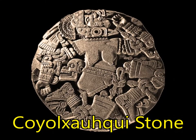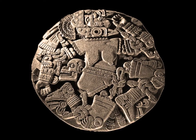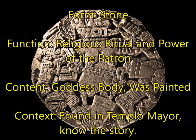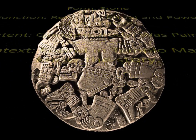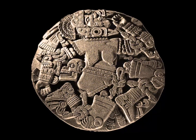Finally, you have the Coyolxauhqui Stone, which would have been painted in bright colors. You need to remember the goddess's body is broken. It was found at the bottom of Templo Mayor, at the bottom of the steps. You do need to know the ritualistic and religious story that goes along with the Coyolxauhqui Stone.